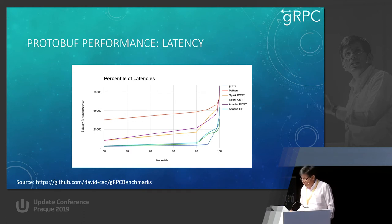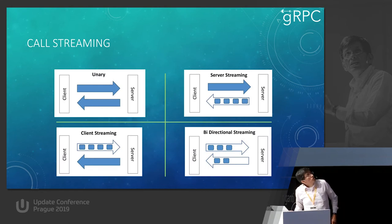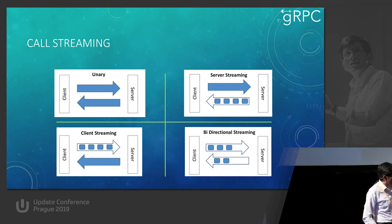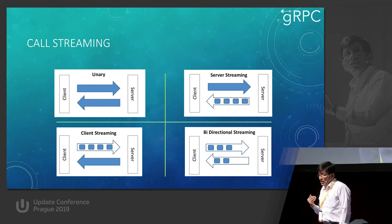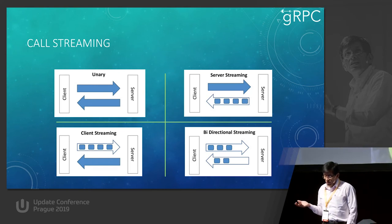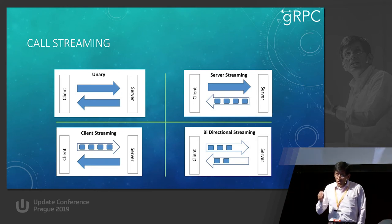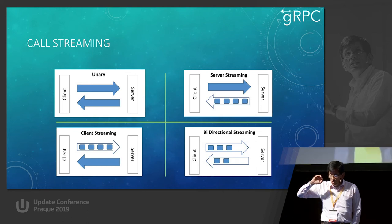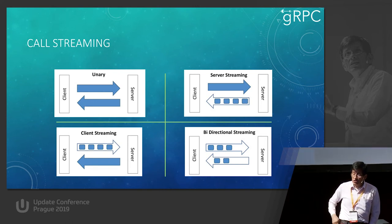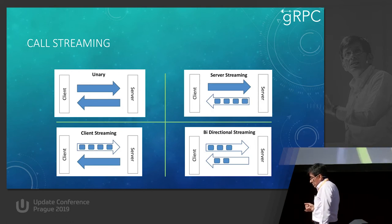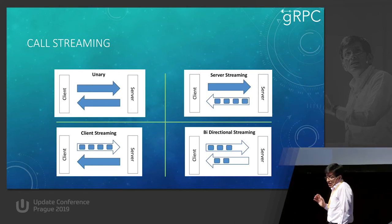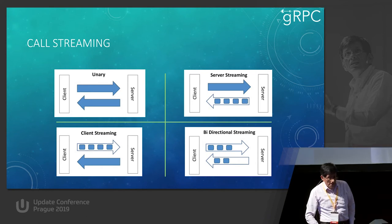Now let's talk about call streaming. The first pattern on the left is what we usually do with web API or WCF - in gRPC this is called unary communication: the client sends a message and waits synchronously or asynchronously for one answer from the server. That's exactly what we did in our last example. But then you can do server streaming: the client makes just one call and says 'server, I expect many answers for this one call, send me as many as you want.'